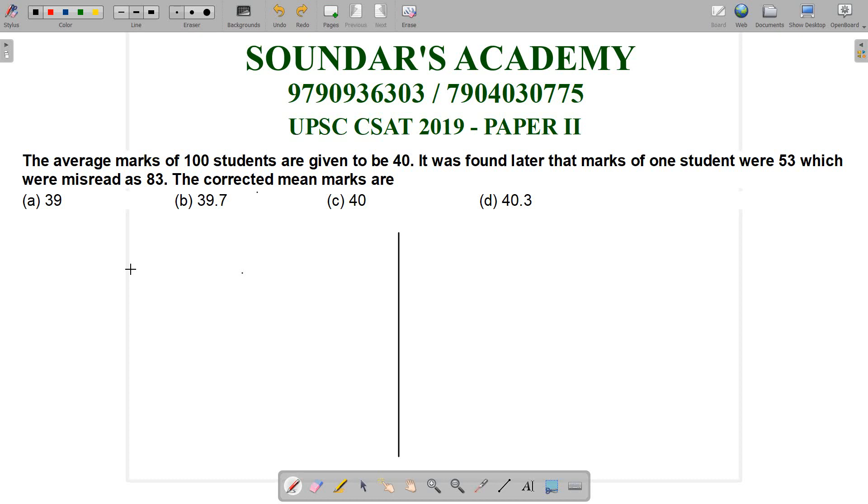Let's talk about a formula approach and concept approach. The average mark of 100 students are given to be 40. It was found later that the mark of one student was 53, which were listed as 83. The corrected mean marks are: